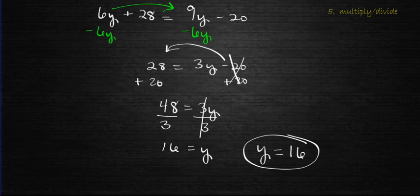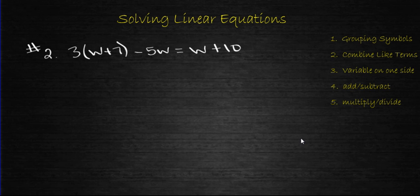Let's look at the next example. Number 2, we have 3(w + 7) - 5w = w + 10. This time we do have grouping symbols to deal with, so we're going to need to get rid of those. Whenever you have this number in front of the parenthesis, you're going to need to distribute the 3 to the w and the 7 by multiplying. So we end up with 3w + 21 - 5w, and that equals w + 10.